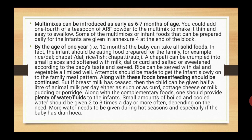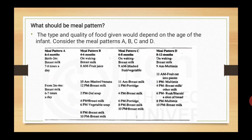Multi-mixes can be introduced as early as six to seven months of age. By the age of one year, the baby can take all solid foods. In fact, the infant should be eating food prepared for the family like rice and dal, chapati and dal, rice and fish, or chapati and sabji. Attempts should be made to get the infant slowly onto the family meal pattern, while breastfeeding should be continued. If breast milk has ceased, the child can be given half a litre of animal milk per day. Along with complementary foods, one should provide plenty of water or fluids to the infant. The type and quality of food given would depend on the age of the infant.